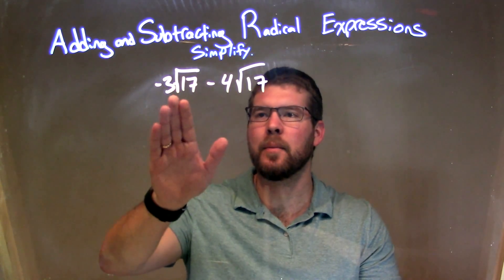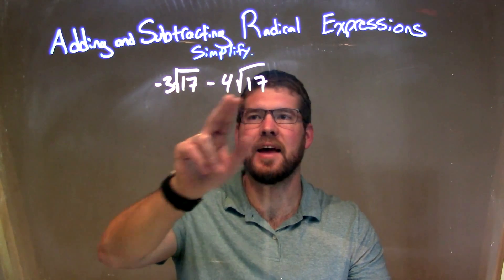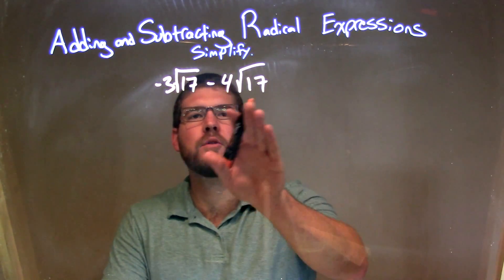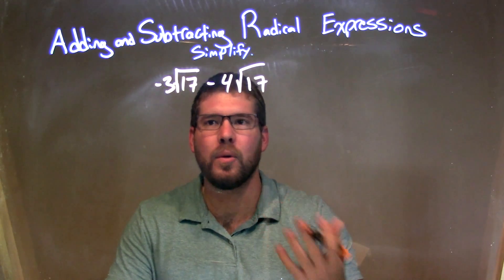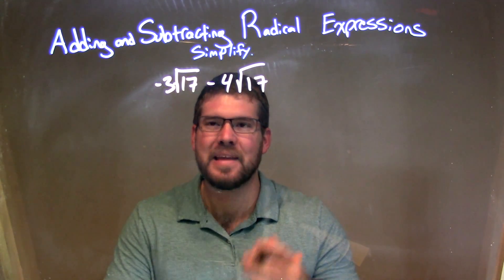Well, since we have a number times the square root, and that square root is the same for both of these parts, we can look at the number in front of the square root: negative 3 minus 4. What's negative 3 minus 4? Negative 7.